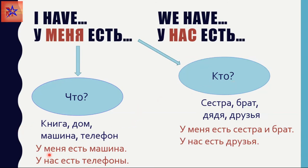Let's see some examples. У меня есть машина — I have a car. У нас есть телефоны — We have phones. У меня есть сестра и брат — I have a sister and a brother. У нас есть друзья — We have friends.